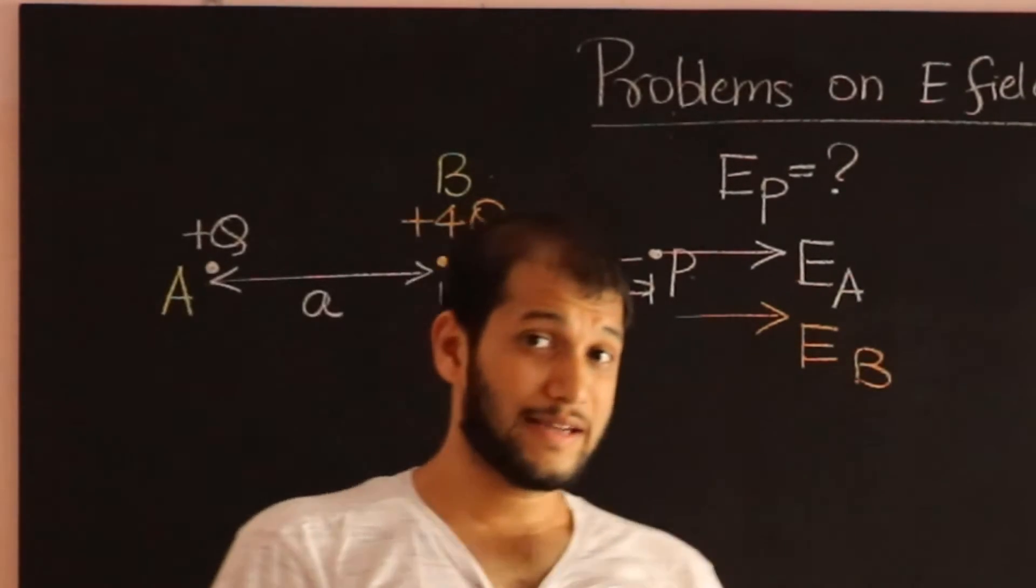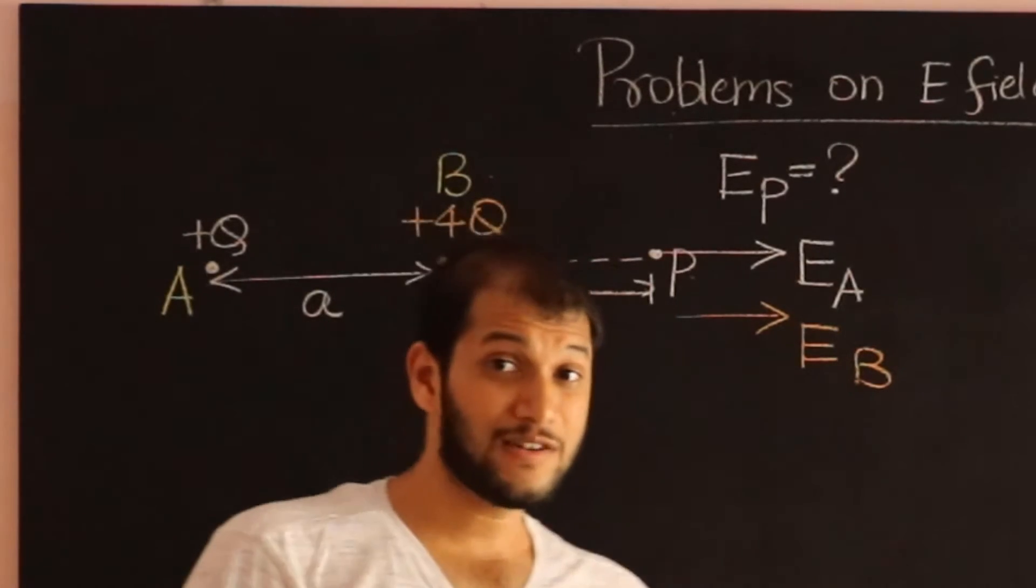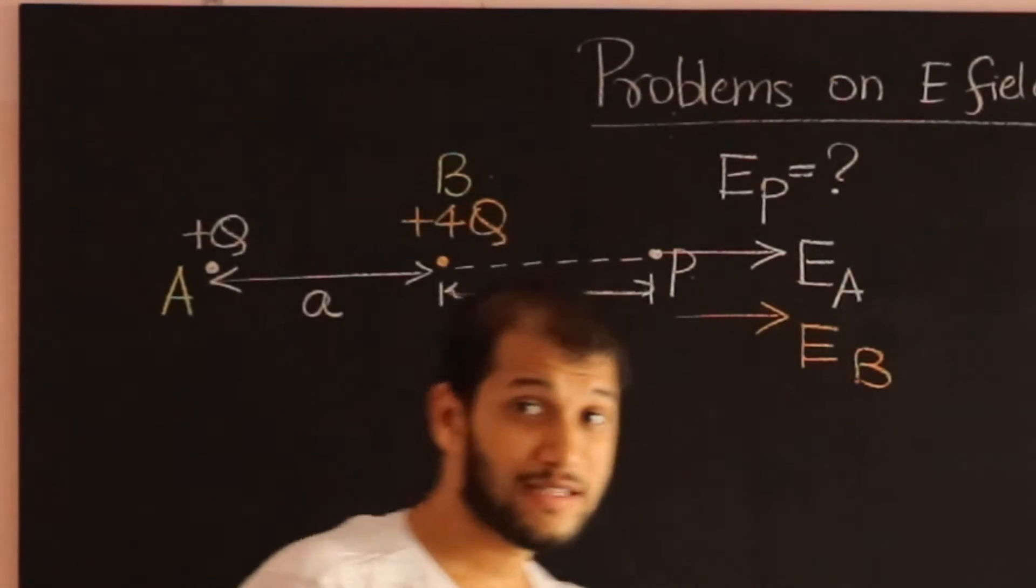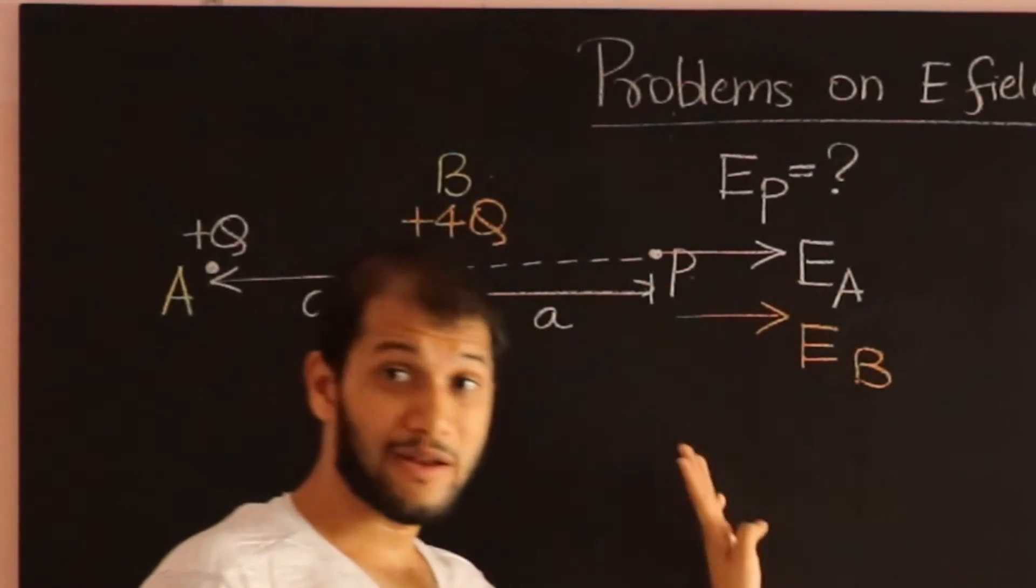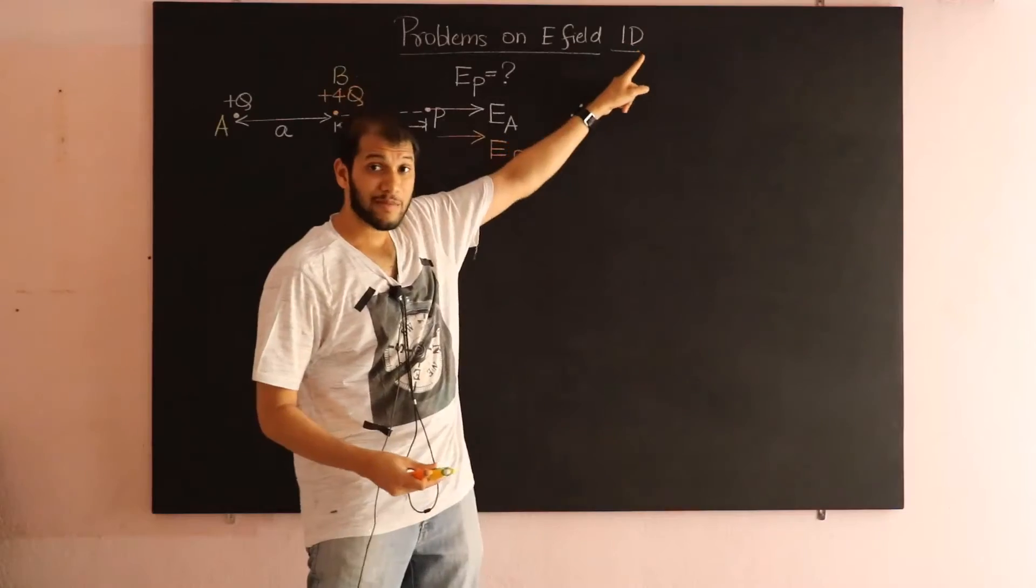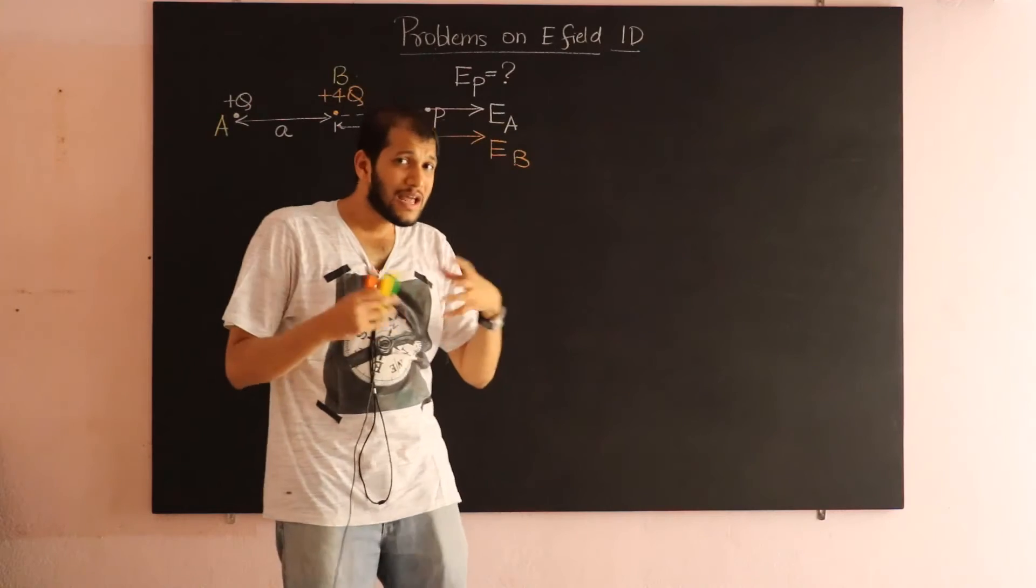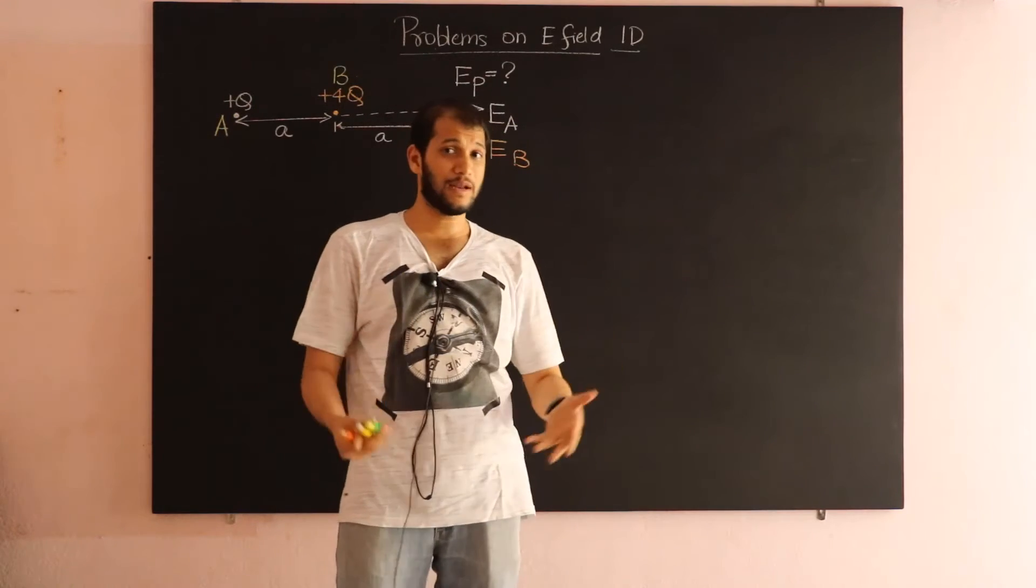Therefore, the total electric field is going to be a vector sum of E_A and E_B. But notice over here, the two fields are in the same direction, and we are dealing with one dimension. When you're doing that, you don't have to worry about vector addition. You can just add them or subtract them.